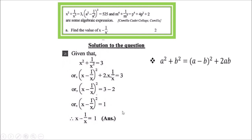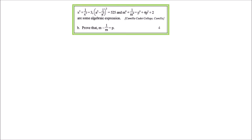I think you understand. If not, go back and look again — I think you will understand. Now we go to question (b): Prove that m - 1/m = p. The stem part connected here is: m⁴ + 1/m⁴ = p⁴ + 4p² + 2.